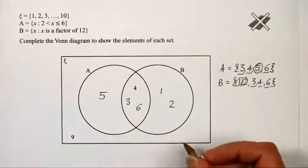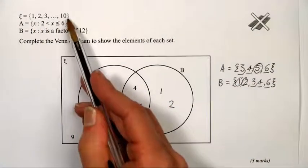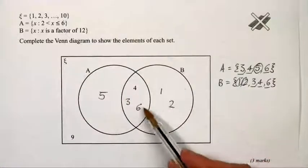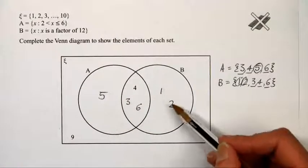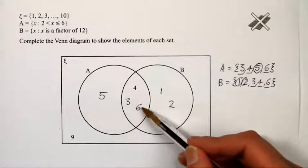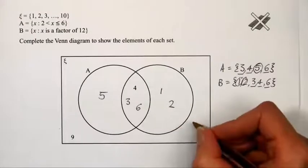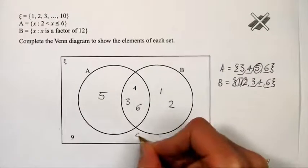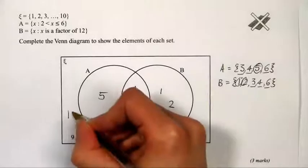To complete the Venn diagram, we need the other elements of the universal set that haven't been accounted for. We've got 1, 2, 3, 4, 5, and 6, so we need 7, 8, 9, and 10.